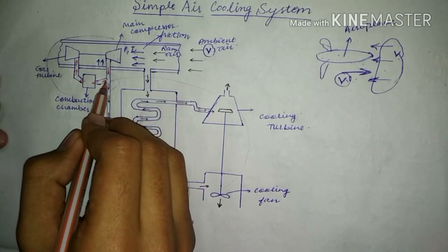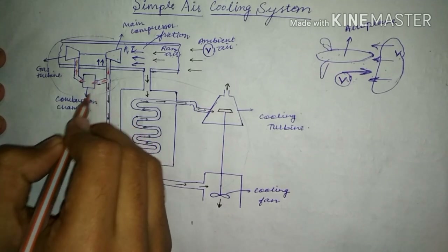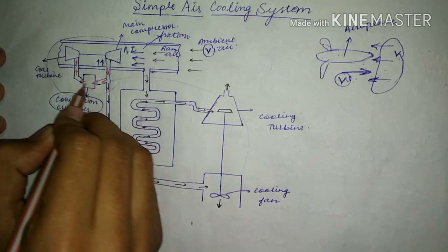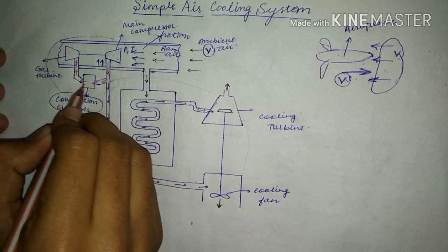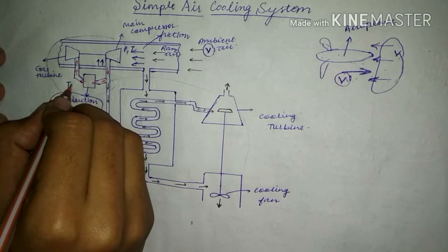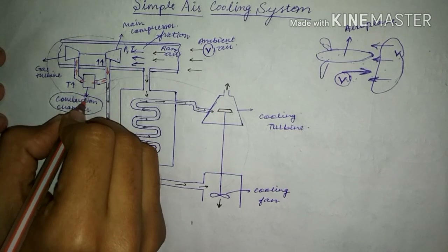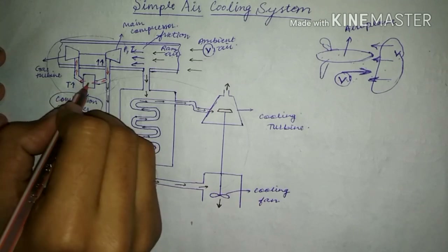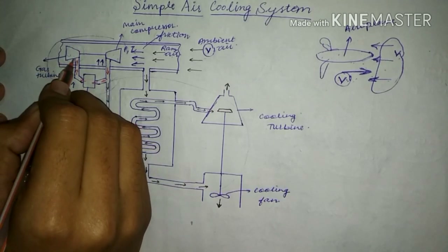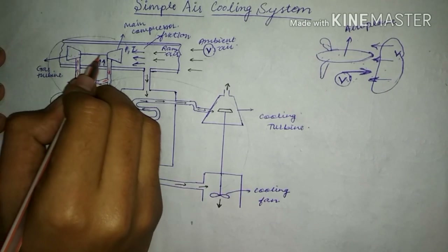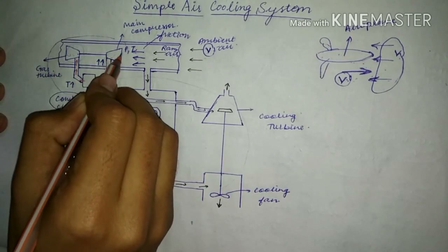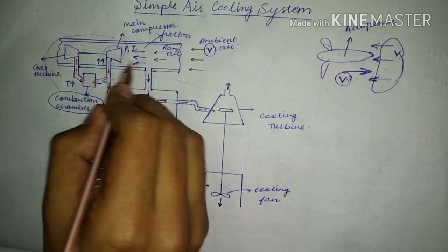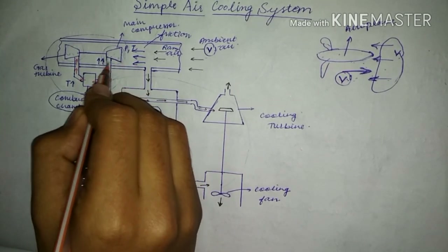The compressor increases the pressure and temperature of this air. This high pressure, high temperature gas is fed into the combustion chamber where combustion of the air-fuel mixture takes place. The resulting high pressure, high temperature gas is used to run the gas turbine, whose shaft connection is used to drive the main compressor.